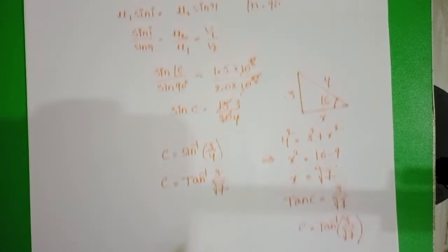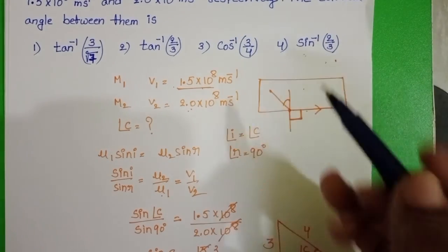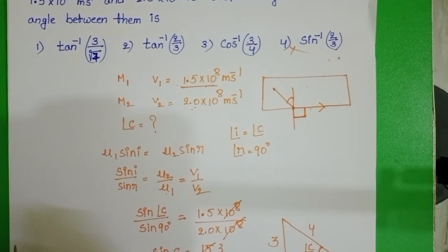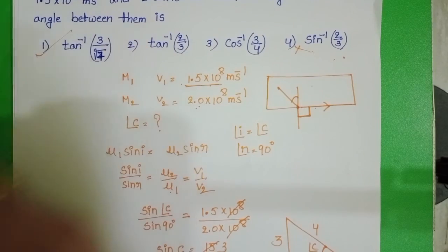Check the given options. Here, sin inverse 2 by 3 is there. So this option is not correct. Tan inverse 3 by root 7. So first option is correct.